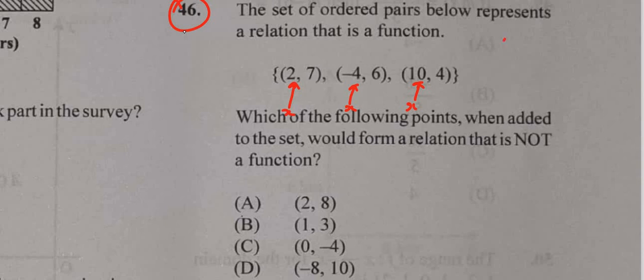So if we look at the input values going on to the output values, input to output. These are our x values, then our y values. We have 2, we have negative 4, and we have 10. 2 goes to 7, negative 4 goes to 6, and 10 goes to 4. So that's a 1 to 1 mapping.